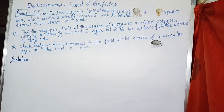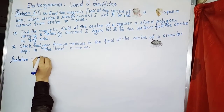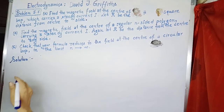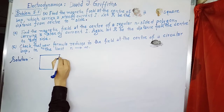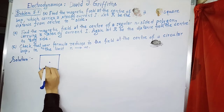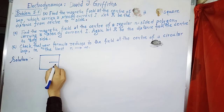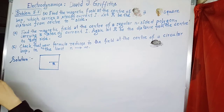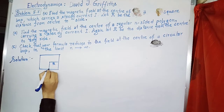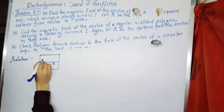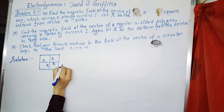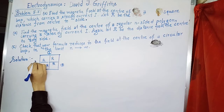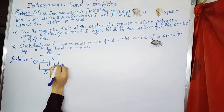For solving this question, first we'll draw a square with n sides. Let this be a square of side n, and let this be the center of the square. The distance from the center to each side is equal to R, so all four distances are R. We label the four sides as segment 1, segment 2, segment 3, and segment 4, with current flowing in the indicated direction.